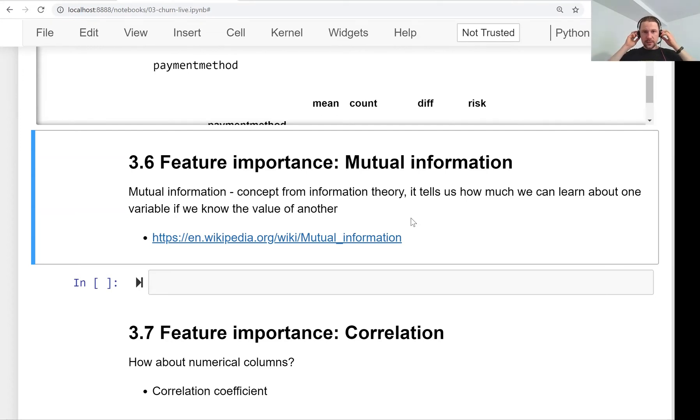Welcome back, this is lesson 6 of Machine Learning Zoom CAM session 3, and we will talk about mutual information, which is a way to measure the importance of categorical variables.